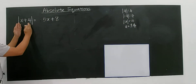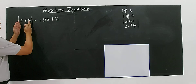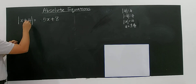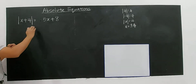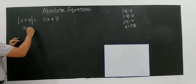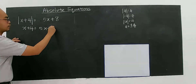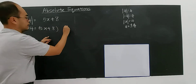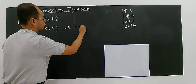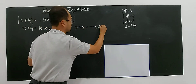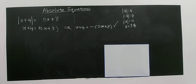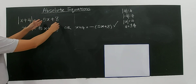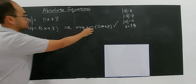If you have modulus of x plus 4, it can equal 5x plus 8, or it also can be negative 5x plus 8. So once you open up the modulus, don't think too much. You just think: if you open up the modulus, you need to put one positive — x plus 4 equals 5x plus 8 — and the other one will be x plus 4 equals to negative of 5x plus 8. This is the most important step that you must remember.